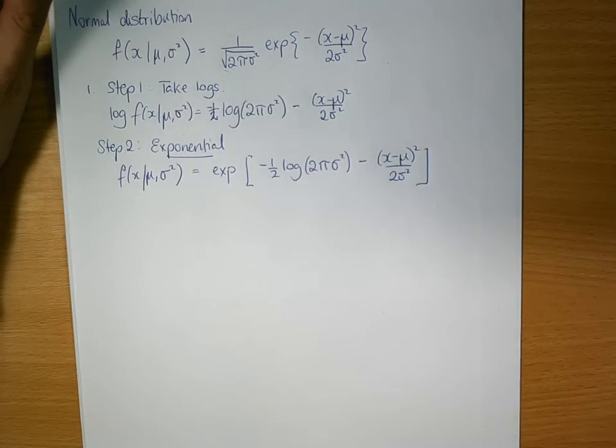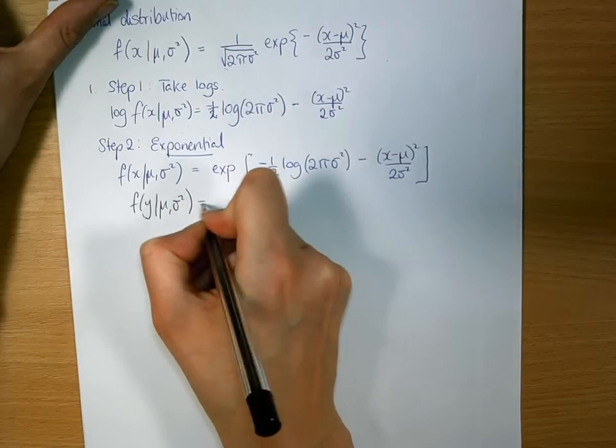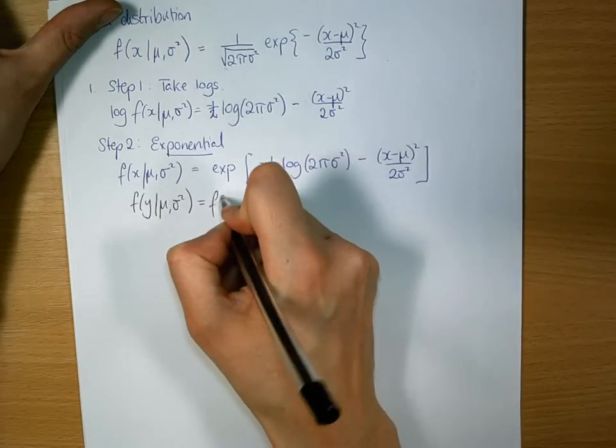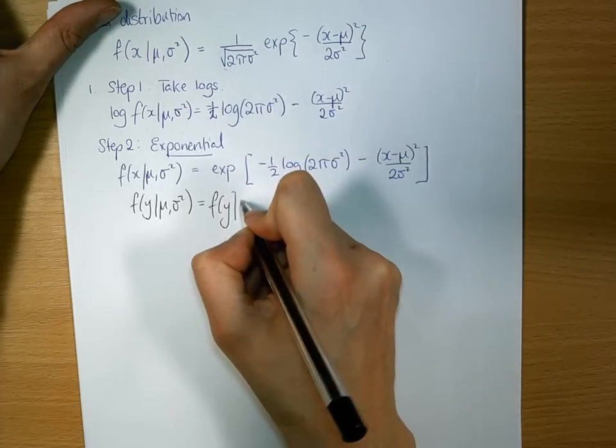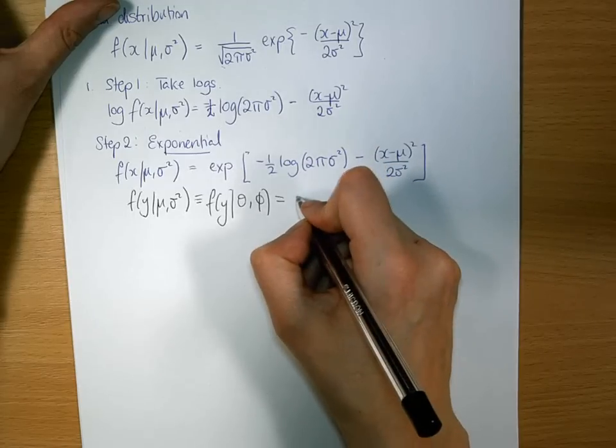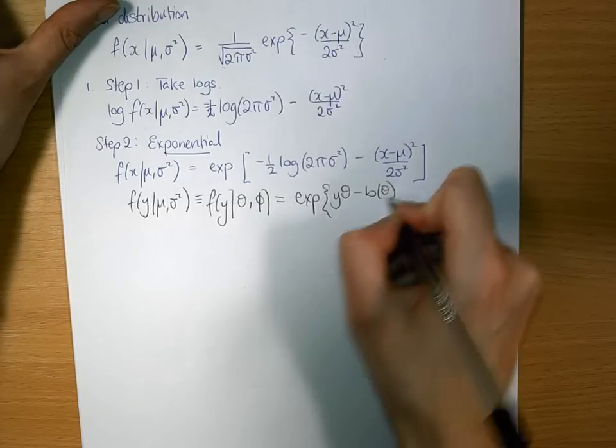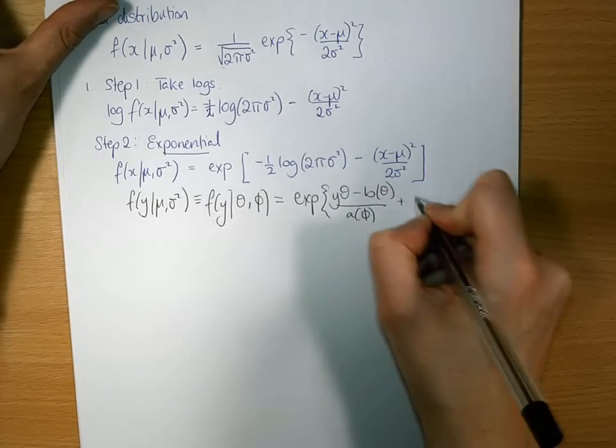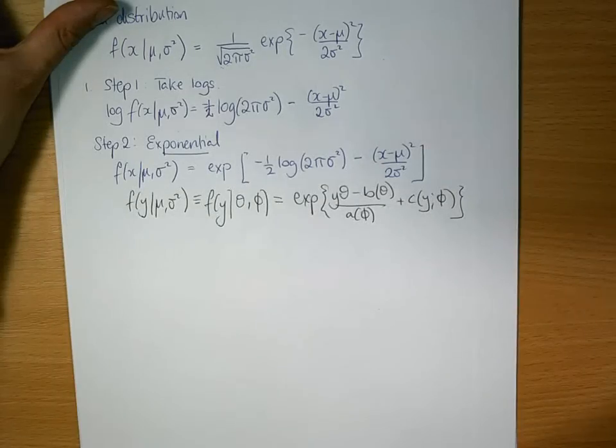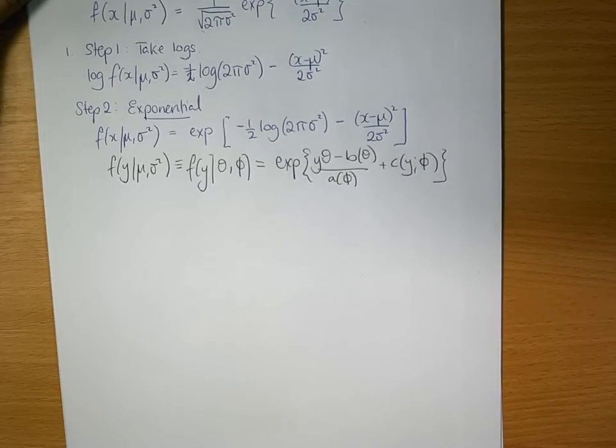Remember what we want this in terms of is f of y given theta to be equivalent to exponential of y theta minus b of theta over a of phi plus c of y given phi.